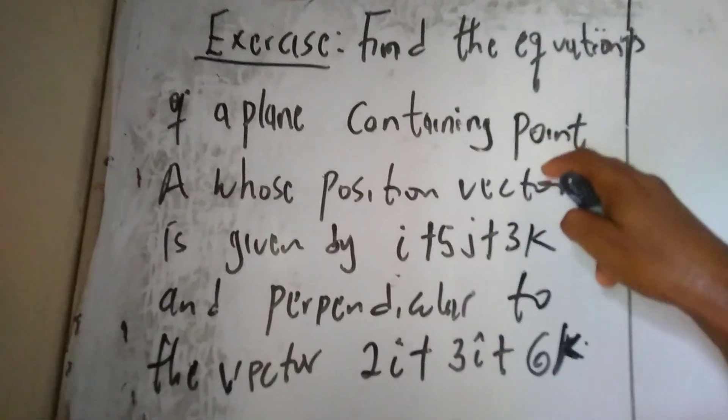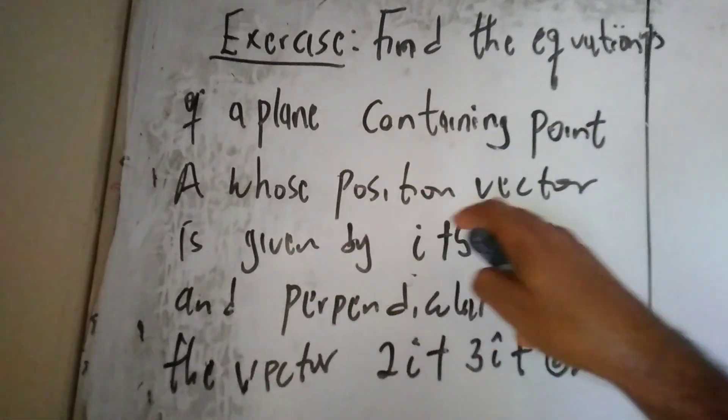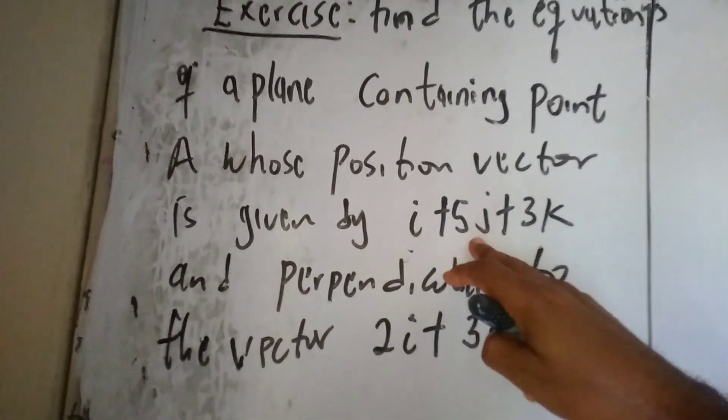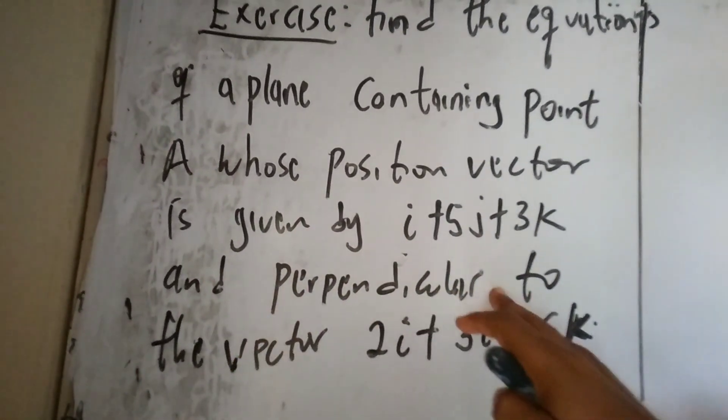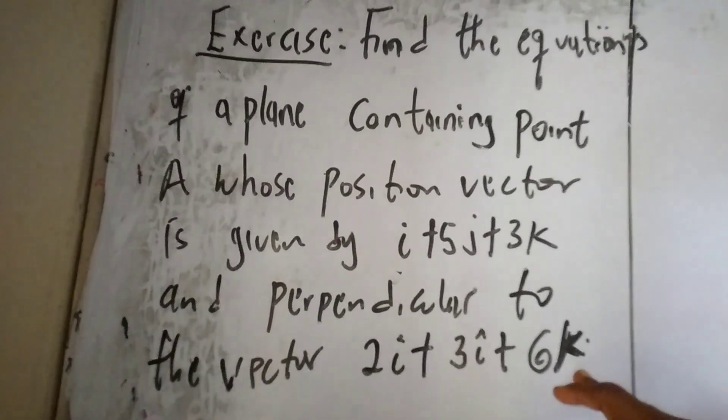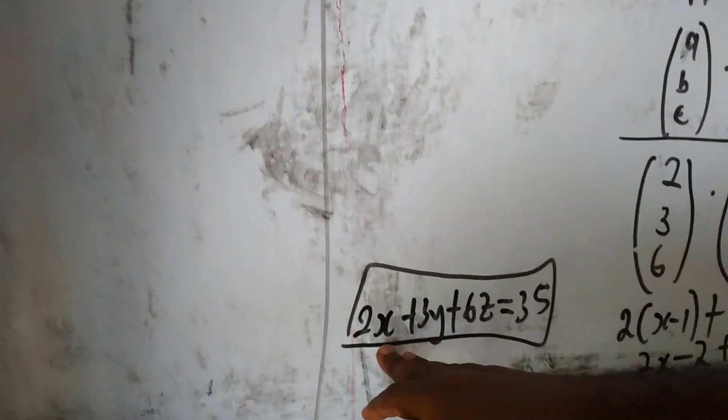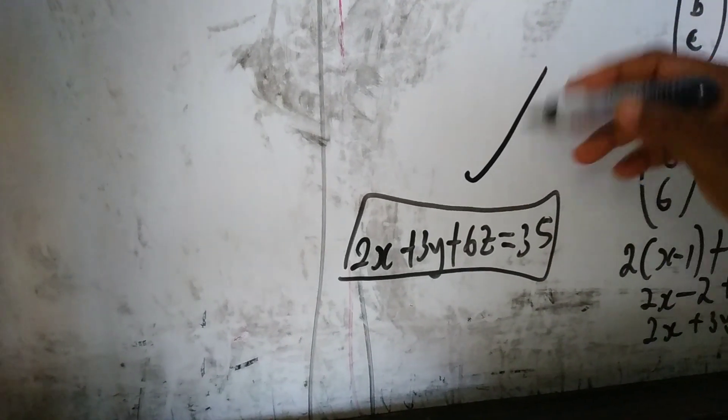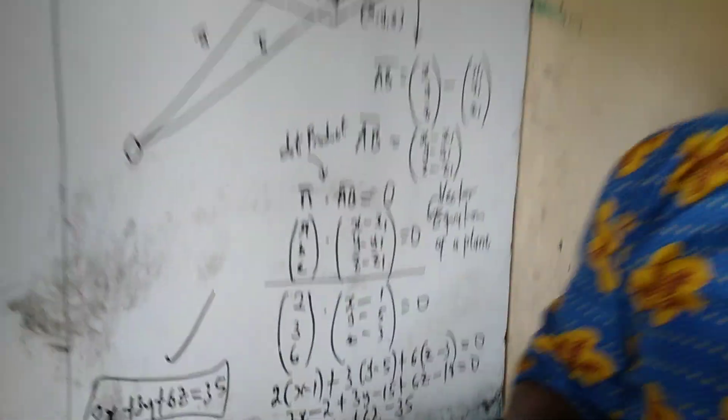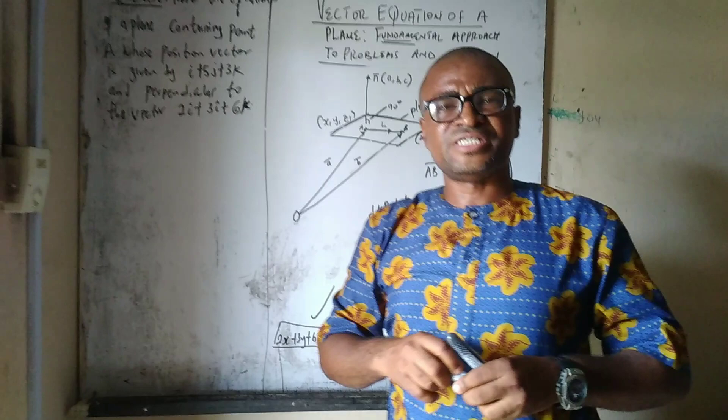The question says, find the equation of a plane containing point A whose position vector is given by i plus 5j plus 3k and perpendicular to the vector 2i plus 3j plus 6k. So, the vector equation of that plane is what we have here. Thank you so much concerning your patience in listening to my video.